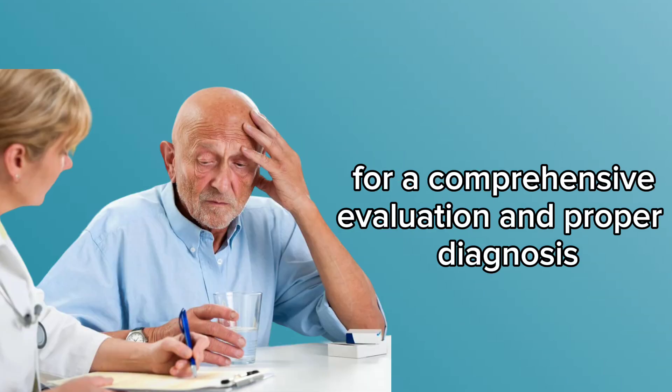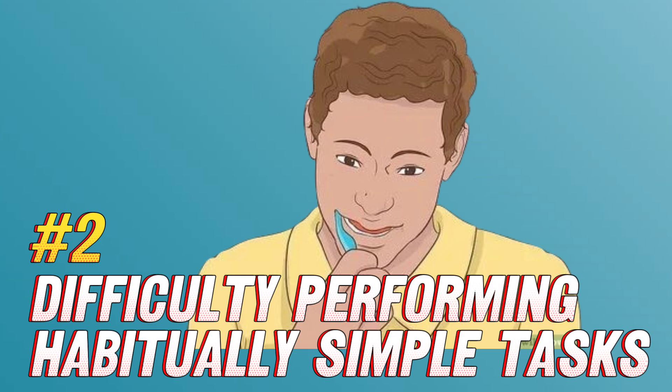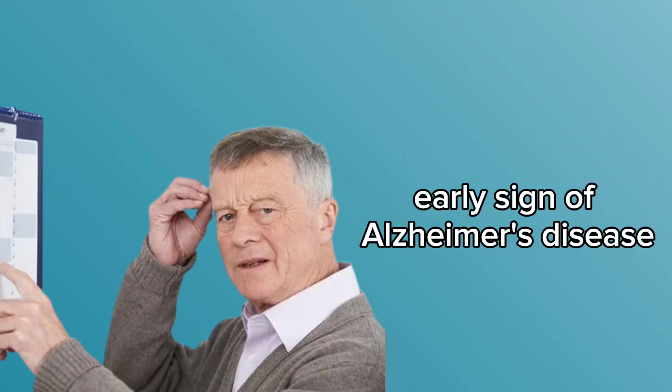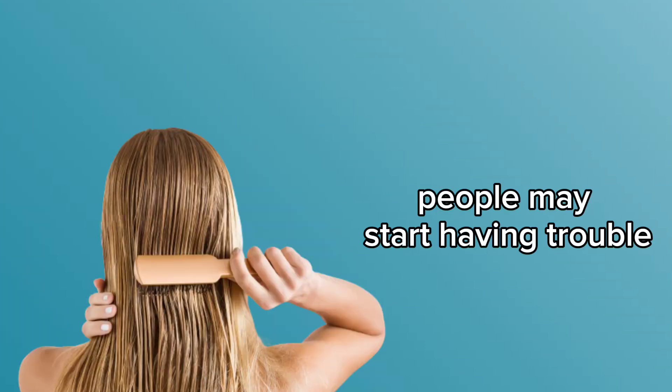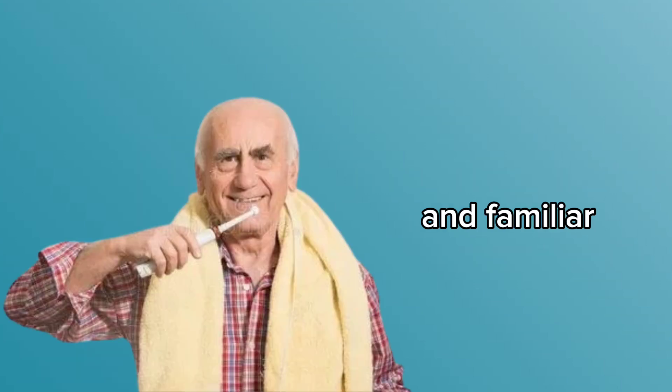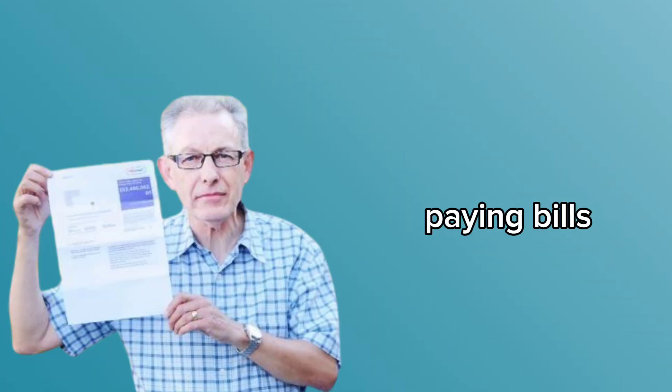Number two: difficulty performing habitually simple tasks. Difficulty performing habitually simple tasks is another early sign of Alzheimer's disease. People may start having trouble performing everyday activities that were once simple and familiar, such as preparing a meal, paying bills, or following basic instructions.